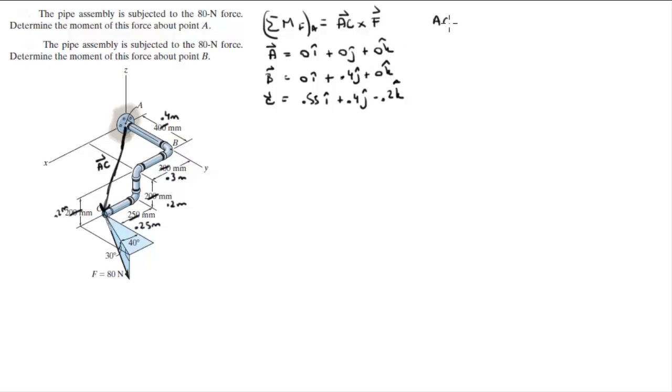Now we need to find the Cartesian vector form of F. Now vector AC is C minus A, but A is the origin so this is equal to vector C which we have and it's 0.55 in the i plus 0.4 in the j minus 0.2 in the k.